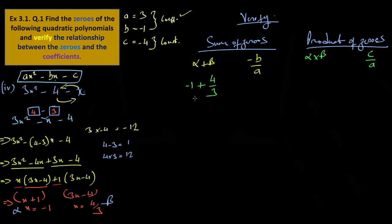Minus 1 plus 4 by 3. 4 minus 3 is 1, 1 by 3. Minus B is 1, minus minus 1 is plus 1, divided by 3. 1 by 3. It matches.